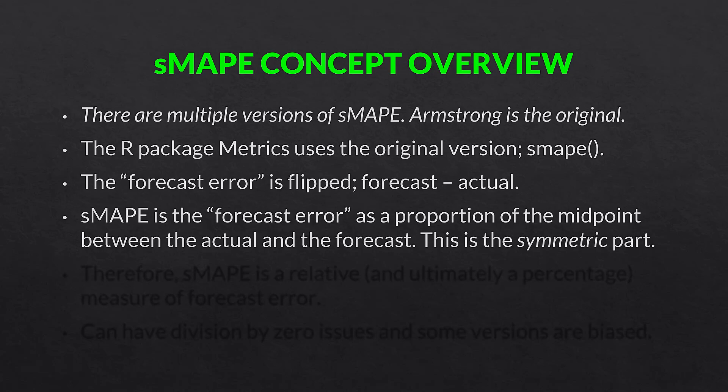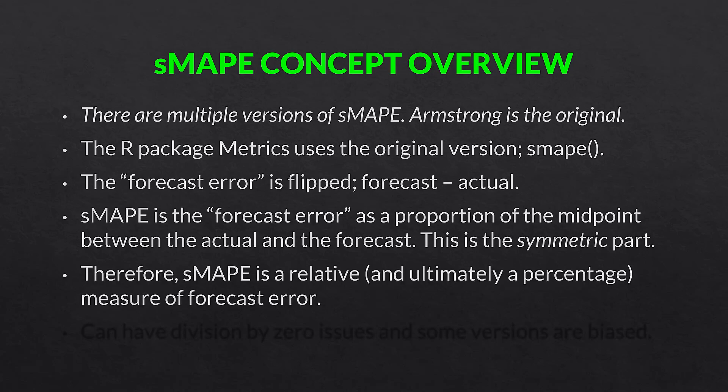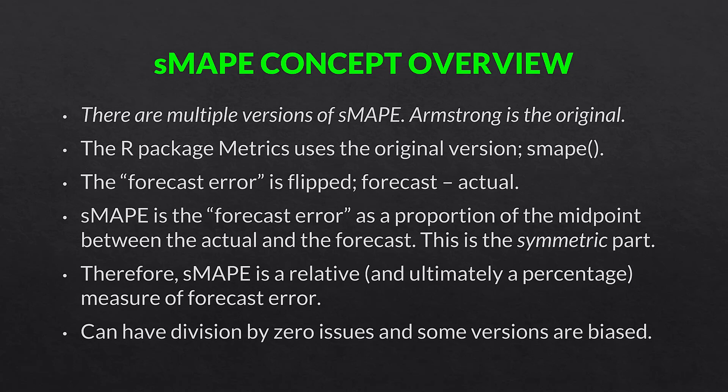SMAPE is the forecast error as a proportion of the midpoint between the actual values and the forecast value — the average of the midpoint between actual and forecast for a given time period. This is the 'symmetric' part of symmetric mean absolute percentage error. SMAPE is therefore a relative percentage measure of forecast error, just like its sibling MAPE. Like other forecast accuracy measures, it can have division by zero issues, and some versions are biased. Many of the multiple versions try to remedy these issues with slightly different formulas.